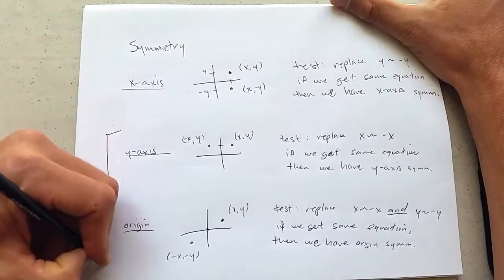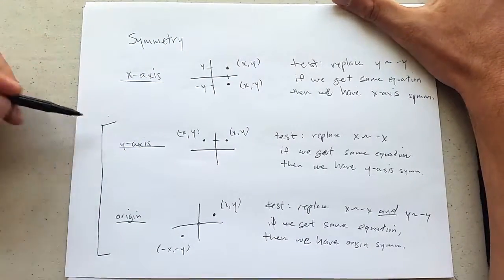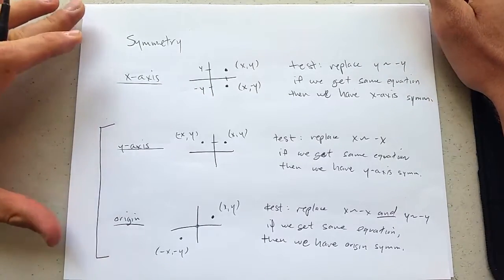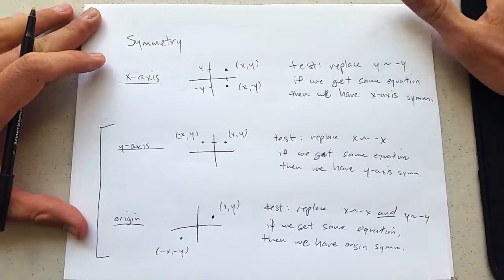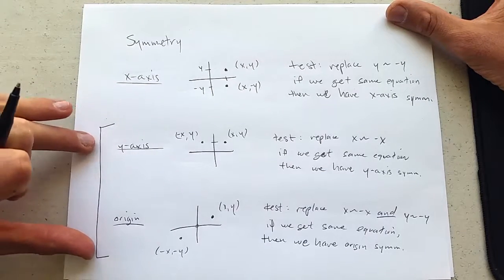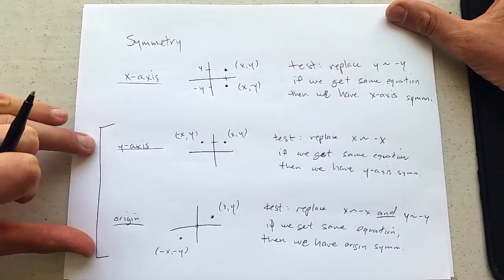So in the future, when we do functions, very soon, these are the ones to focus on. X-axis is going to be very rare until we do polar coordinates, which won't happen until next quarter. So y-axis and origin symmetry are going to be the popular ones.